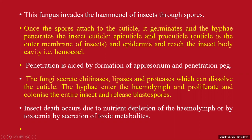After germination, the hyphae penetrate inside the insect cuticle — crossing the epicuticle and procuticle, which form the outermost membrane of the insect — and also cross the epidermis to reach inside the body cavity, the hemocoel. The fungus penetrates the body cavity using an appressorium and a penetration peg.